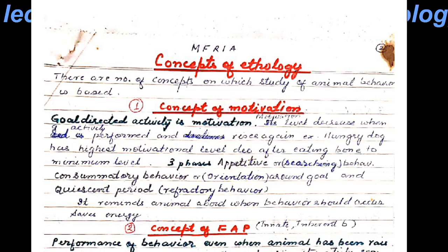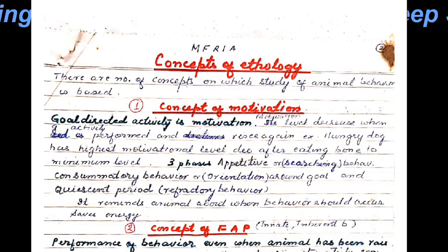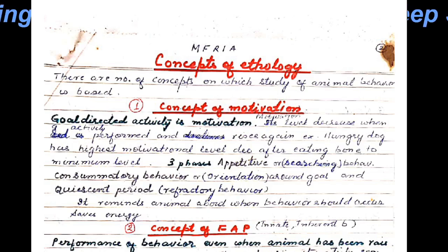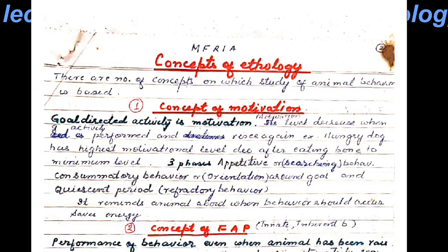There are three phases in the concept of motivation. The first is the appetitive phase, also called the searching phase. It is the period when the natural drive or desire to satisfy a bodily need — such as finding a mate, eating food, or drinking water — is at the highest level.